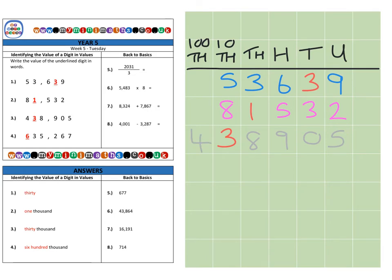So our number reads as four hundred and thirty-eight thousand nine hundred and five. If we take the three, we can clearly see it's in the ten thousands column for a value of thirty thousand.